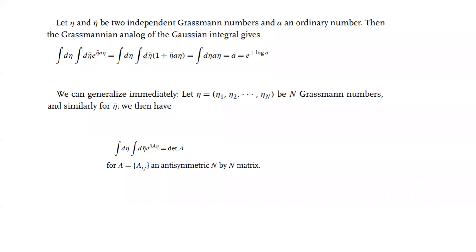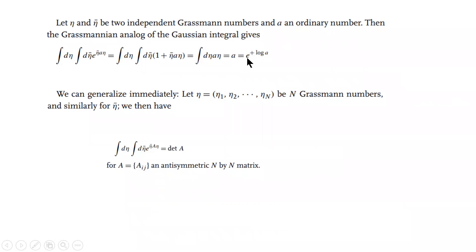The reason we are doing all this is that we essentially want to calculate the Gaussian integral, because the path integral takes the form of Gaussian integrals. In the case of Grassmann numbers, we want to calculate this Gaussian integral since we are dealing with fermions in the Dirac field, which obey Grassmann algebra. Applying the Grassmann rules, the Gaussian integral evaluates to the quantity a, or equivalently e^(log a) = a. If we extend eta from η₁ to ηₙ, the result generalizes to the determinant of the matrix A.